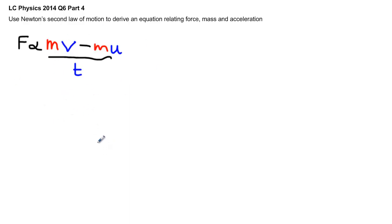And basically, we just rearrange this until we get F equals MA. So let's do it. F is proportional to... I'm going to pull the M's out here altogether. I'll just bunch them up and put the rest in brackets. So I'm going to say V minus U is left over, and the T I can also stick into the brackets there as well. So I've just pulled the M out altogether.